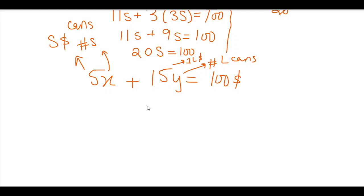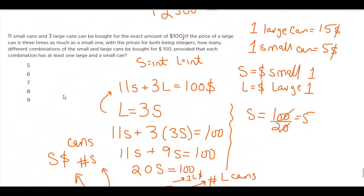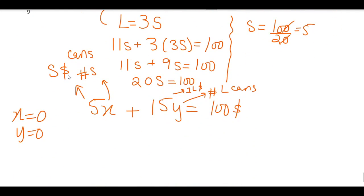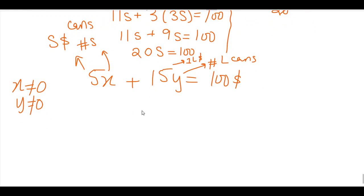So now the question is how many different combinations are possible, given the fact that neither x is equal to 0 and neither y is equal to 0, because the question basically asked me that this is not allowed. I need at least one large and one small.